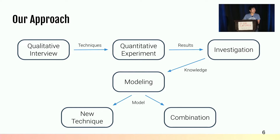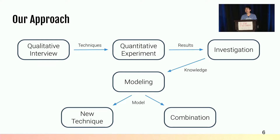We designed a hybrid approach to answer these questions. First, we performed a qualitative interview with human experts and collected existing techniques from the experts. Then, we performed a quantitative experiment to measure the effectiveness of all the techniques. Then, we investigated why and how they work, and used that knowledge to build a theoretical model to explain the problem. Finally, we derived a new technique and a technique combination from the model to further improve exploit reliability.